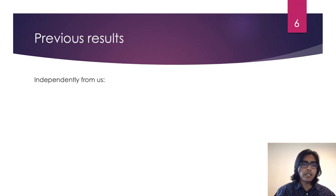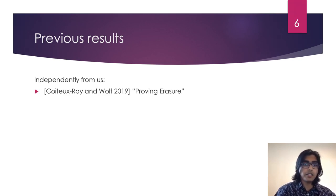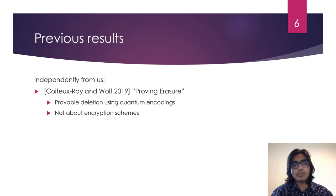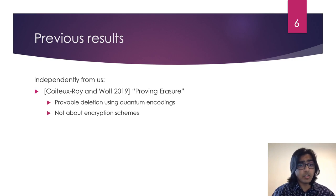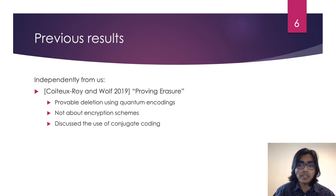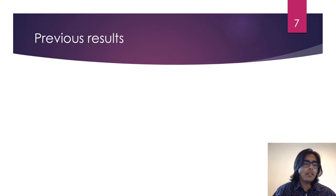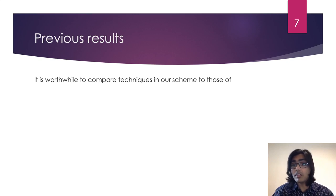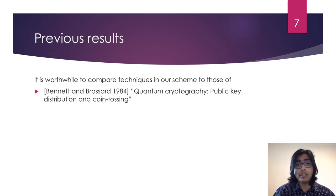Independently from us, Quantiroir and Will touched on the idea of provable deletion using quantum encoding. However, their work is not explicitly concerned with encryption schemes, whereas we are explicitly concerned with what it would mean to delete a quantum ciphertext. That being said, there are similarities between our scheme and their proposed scheme in that they both make use of conjugate coding, or BB84 states, to prove deletion. Although quantum key distribution is not intrinsically related to quantum encryption with certified deletion, it would be instructive to compare our work to the existing literature on BB84 QKD.